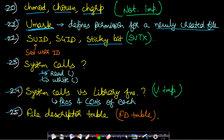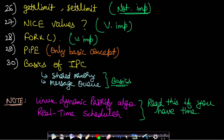After that, you can go to the file descriptor table — what is an FD table and how it is used. The next question about getrlimit and setrlimit is not important, you can skip it and come back later. The next topic is nice values, which indicate the priority of a running process — this is very important and you should read about it carefully.